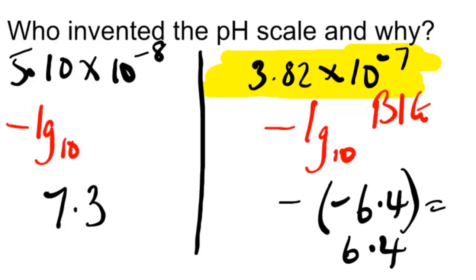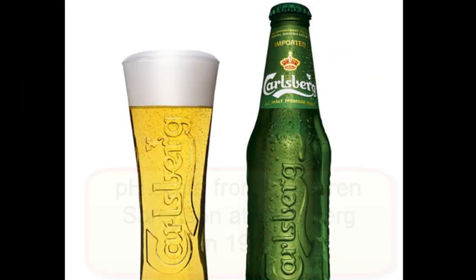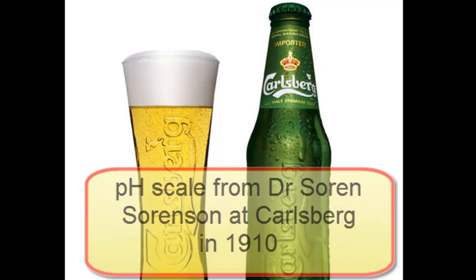Now the number on the right is bigger, 10 to the minus 7 rather than 10 to the minus 8. And look, it turns out to have a smaller pH, so there's an inverse relationship. The higher the concentration of hydrogen ions, the lower the pH value.